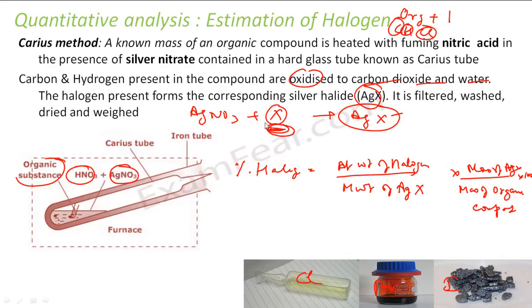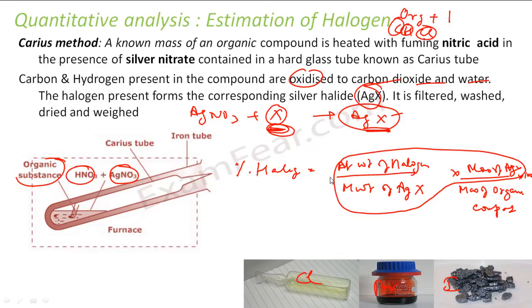You should know the atomic weight of halogen and the molecular weight of AgX formed, because AgX actually gives you the mass of halogen. And the mass of organic compound is the denominator. So mass of halogen divided by mass of organic compound gives you the percentage of halogen.